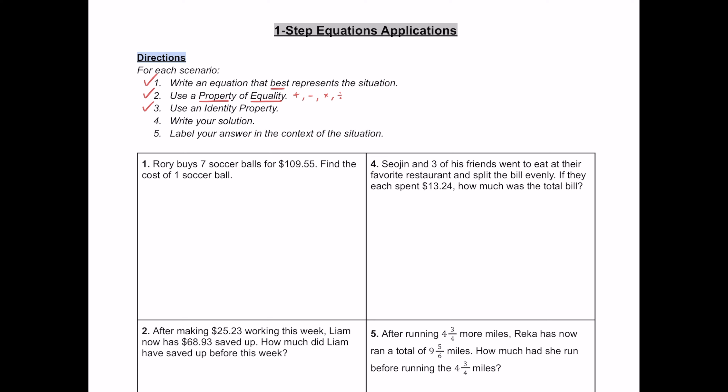Then third, we're going to use one of the identity properties. If you forgot what those are, those are when you get either one or you get zero. For adding and subtracting, we're trying to get zero. For multiplying and dividing, we're trying to get one.